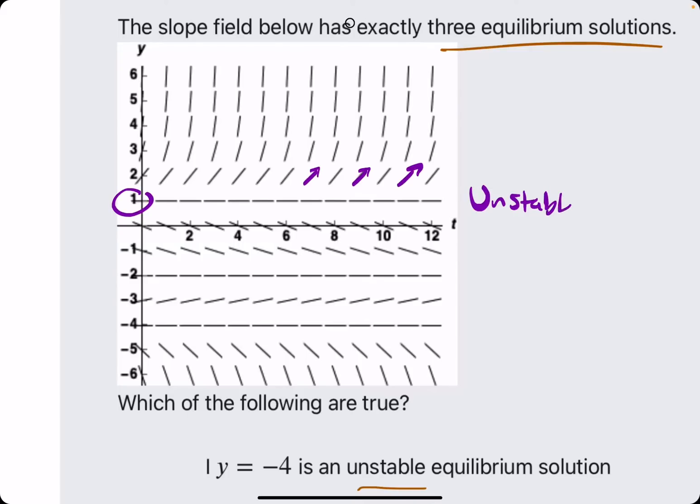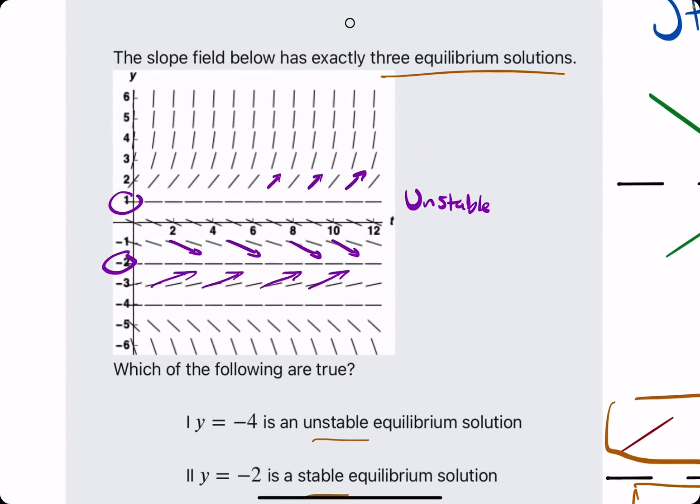We see negative 2 is our next equilibrium solution. It looks like on top, these lines are going towards it from left to right. They are approaching the equilibrium line. And below it, they're very faintly positive lines. But as long as they're positive lines, they will eventually get to negative 2. So they are approaching negative 2 from top and bottom. This is a stable equilibrium solution.